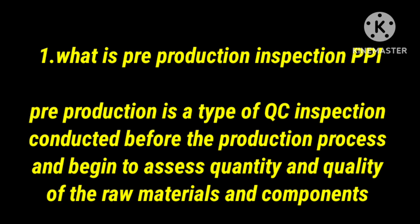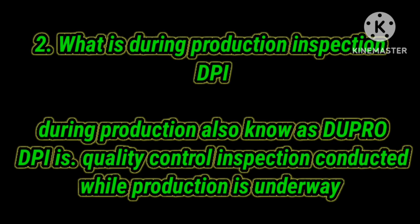What is During Production Inspection? During Production Inspection — we also know it by the name Dupro, or DPI. During Production Inspection: when production starts and we start the production process, we check the parts between 1 to 2 hours into production. We call it During Production Inspection.